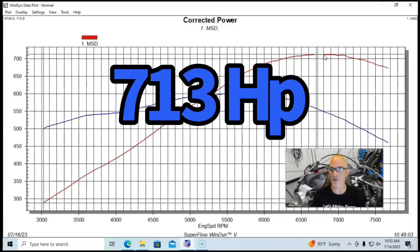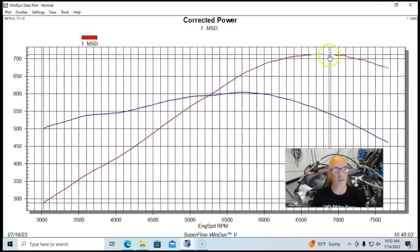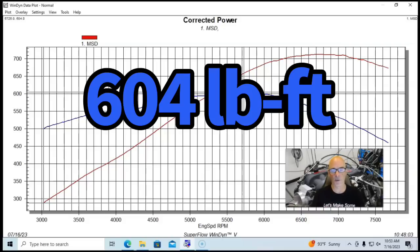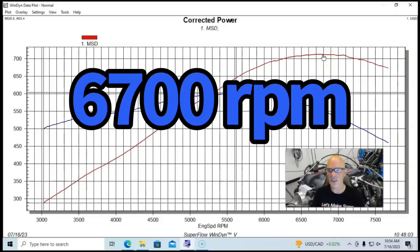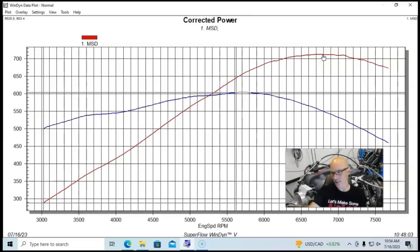Run in this manner on this modified 427 combination, with the MSD intake manifold this thing made over 700 horsepower. It made 713 horsepower. Peak torque checked in at 604 foot-pounds of torque. It did very well. Nice curve, and this is something we've come to expect, good average torque production. This thing ended up making peak power at 6800, so it was revving up fairly decently.